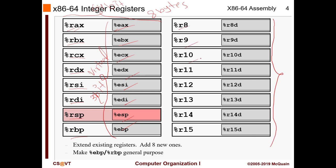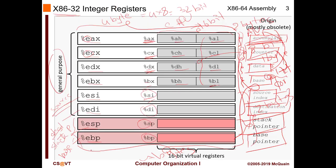There are also brand new registers: R8, R9, R10, R11, R12, R13, R14, and R15. These do not have a virtual 32-bit equivalent because they didn't exist in 32-bit in the first place. The previous register set is intact and we have even more space to work with. Also notable: EBP, which used to be special purpose in 32-bit, becomes general purpose in 64-bit.